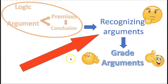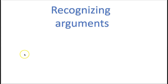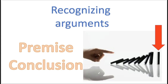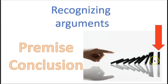Without further ado, let's jump right into recognizing arguments, and then we'll begin to grade the argument — whether it's a good argument or a bad argument. After all, you cannot evaluate or grade an argument unless you know it's an argument. An argument is a group of words that are intended to prove a point, and an argument will always have a premise and a conclusion. You can imagine the premises like falling dominoes — one premise to another to another, which leads to knocking over the inescapable truth of the conclusion.